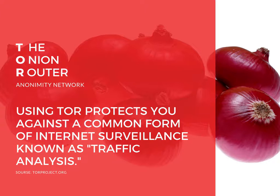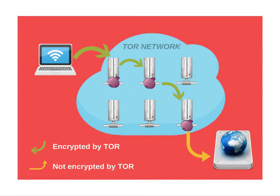Using Tor makes it more difficult for internet activity to be tracked back to the user, but not impossible. Tor encrypts the data, including the destination IP address, multiple times and sends it through a virtual circuit of randomly selected Tor relays. Each relay decrypts a layer of encryption to reveal only the next relay in the circuit, passing the remaining encrypted data onto it. The final relay decrypts the innermost layer and sends the original data to its destination without revealing or even knowing the source IP address.